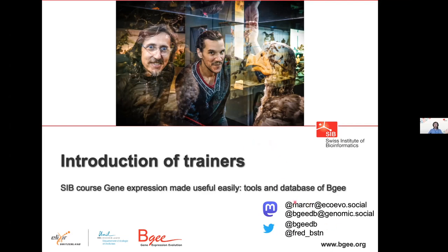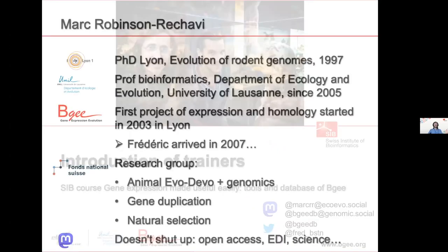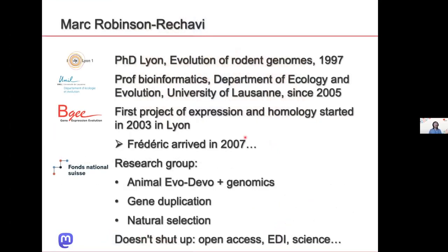We have here links to our social media presence on Mastodon and Twitter. I'm Marc Robinson-Reschavi. I am originally French. I obtained a PhD in Lyon, France, on the evolution of rodent genomes in the previous millennium. During the PhD, I mixed experimental biology and bioinformatics. And after I defended my PhD, I never did experimental biology again — I preferred bioinformatics.